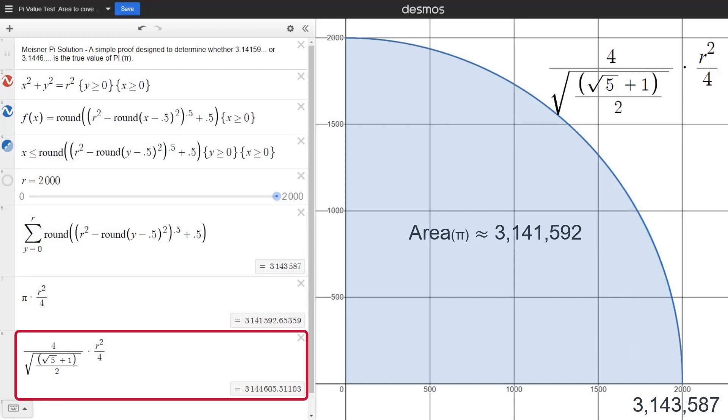Now, let's calculate the area of the quarter circle as pi r squared divided by 4 again, but this time using the claimed pi value of 3.144605, or 4 divided by the square root of the golden ratio, which is the square root of 5 plus 1 divided by 2.